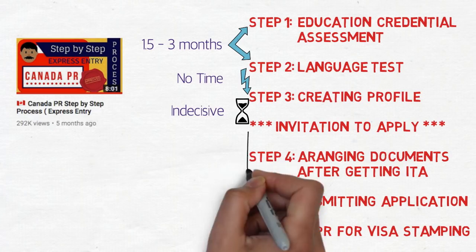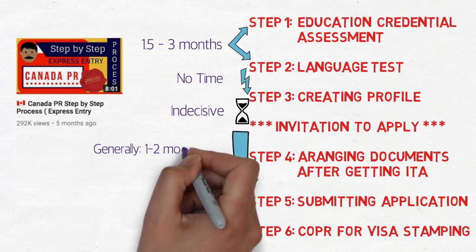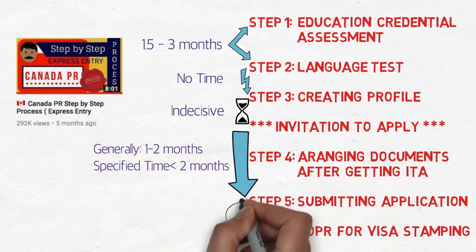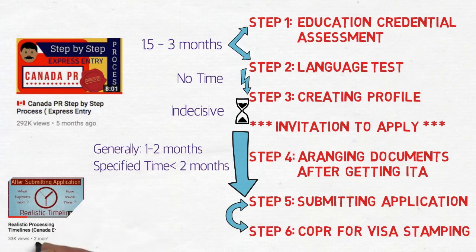After getting an ITA, you have two months to collect all documents and submit your application. The document list is long — it includes proof of funds, medical certificate, police clearance certificate, and if you've been to any other country for more than six months, you need a PCC from that country as well. This generally takes one to two months for most people.